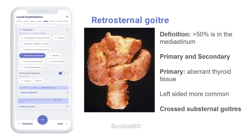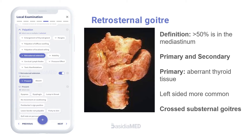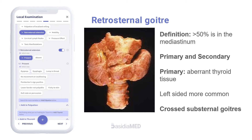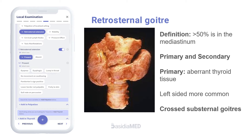Retrosternal goiters can be classified as either primary or secondary. Primary intrathoracic goiters arise from aberrant thyroid tissue which is ectopically located in the mediastinum, receive their blood supply from mediastinal vessels, and are not connected to the cervical thyroid.